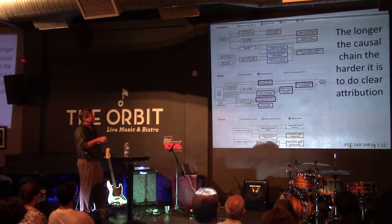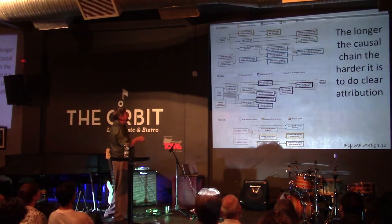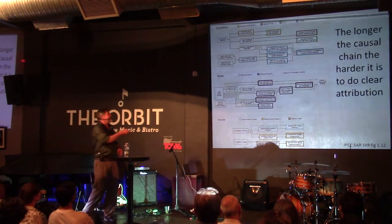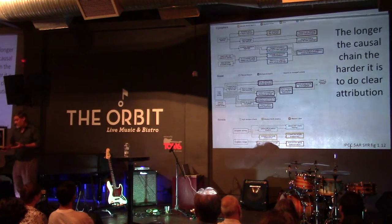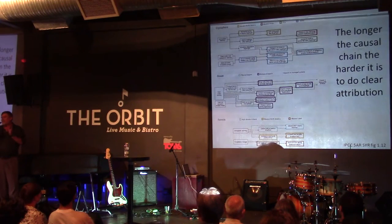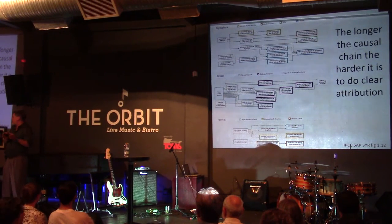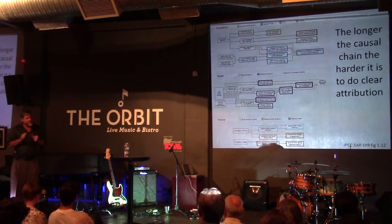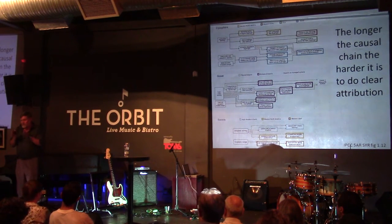The impacts world — which is the world I live and work in — is at the stage where the climate people were maybe 15 to 20 years ago. At that stage they were very strong on detection but only just starting to get into attribution. They're now strong on attribution. We're now learning those techniques — we're strong on detection but have many fewer examples of attribution.